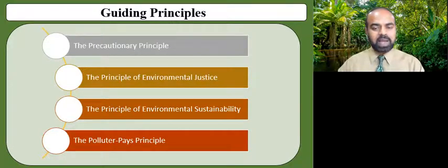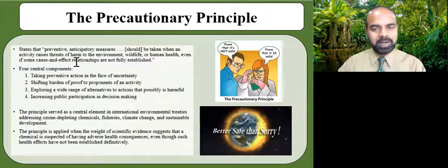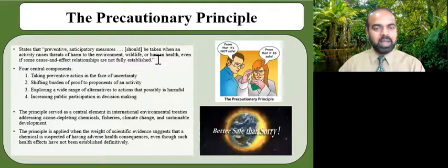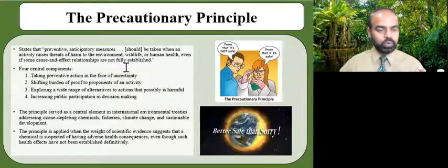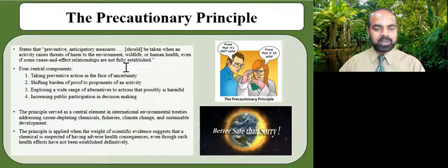As you are introduced to these principles, reflect on how these concepts guide environmental policymakers in formulating policies when protecting and preserving the health of our environment. The precautionary principle states that preventive, anticipatory measures should be taken when an activity raises threats of harm to the environment, wildlife, or human health, even if some cause-and-effect relationships are not fully established. This principle has four central components: one, taking preventive action in the face of uncertainty; two, shifting the burden of proof to the proponents of an activity; three, exploring a wide range of alternatives to potentially harmful actions; and four, increasing public participation in decision making.